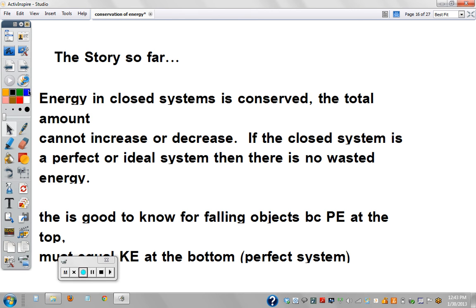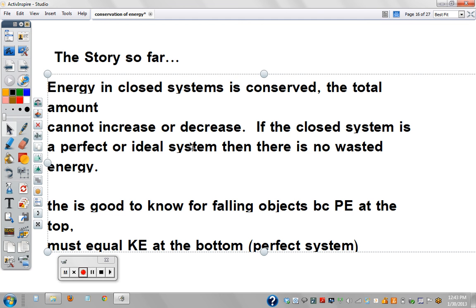The story so far. Energy in a closed system is conserved. That means the total amount of energy in the system cannot increase or decrease. If the closed system is a perfect or ideal system, there's no wasted energy.